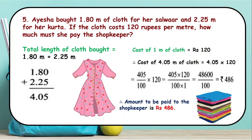The next problem: Ayesha has bought 1.80 meters of cloth for her salwar and 2.25 meters of cloth for her kurta. If the cloth costs 120 rupees per meter, how much must she pay the shopkeeper? Total cloth bought is 1.80 plus 2.25 meters. Placing the decimals one below the other, the total length is 4.05 meters. Then we multiply it by the cost of 1 meter, which is rupees 120.